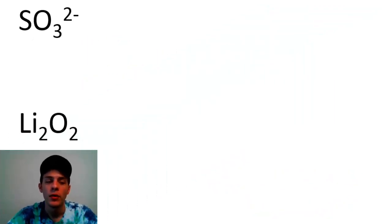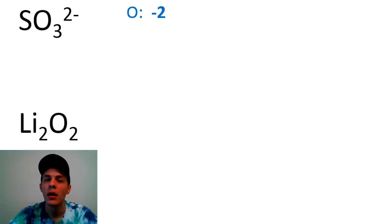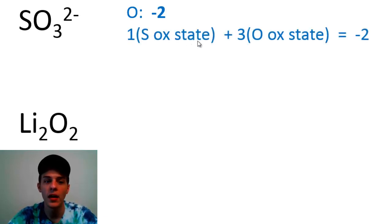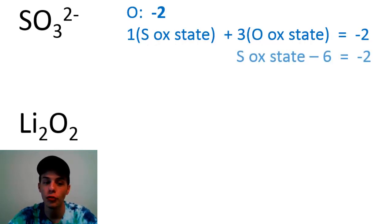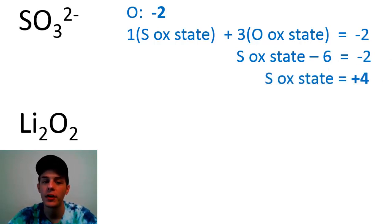Next, the sulfite ion SO3²⁻. Oxygen has an oxidation state of −2. Using rule three for a polyatomic ion, one times the oxidation state of sulfur plus three times the oxidation state of oxygen equals −2. Three times −2 is −6, so the oxidation state of sulfur minus six equals −2. Adding six to both sides gives sulfur an oxidation state of +4.